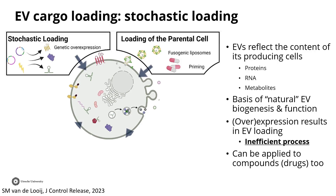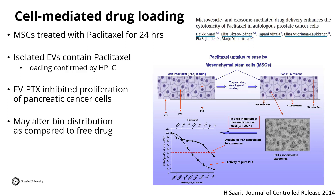This can also be applied for small drug compounds. For instance, this study — almost 10 years old — wanted to deliver the anti-tumor drug Paclitaxel using EVs. They treated MSCs with this compound for 24 hours, then isolated the extracellular vesicles. Through HPLC, they found the compound was loaded into the EVs these cells released. In the bottom graph you can see this compound inhibits tumor proliferation, and these EVs are now also able to do so. Even though it doesn't seem more efficient in this case, it gives you the option to deliver your cargo with a completely different biodistribution profile and perhaps specifically target tumor cells to decrease off-target cytotoxicity.